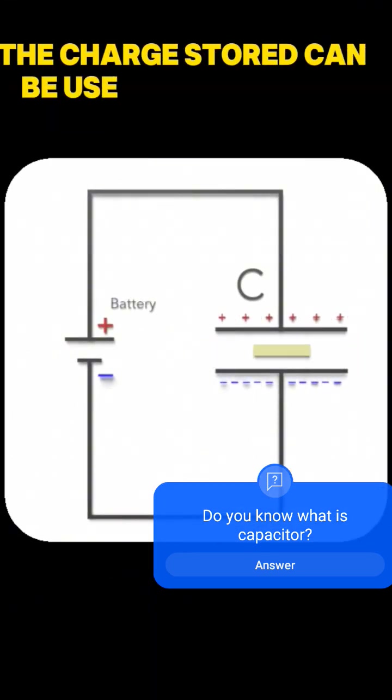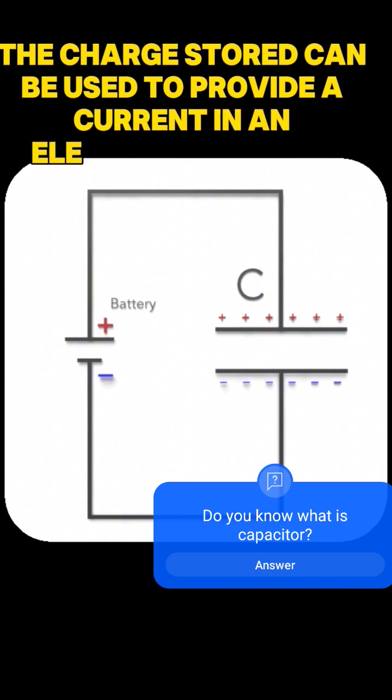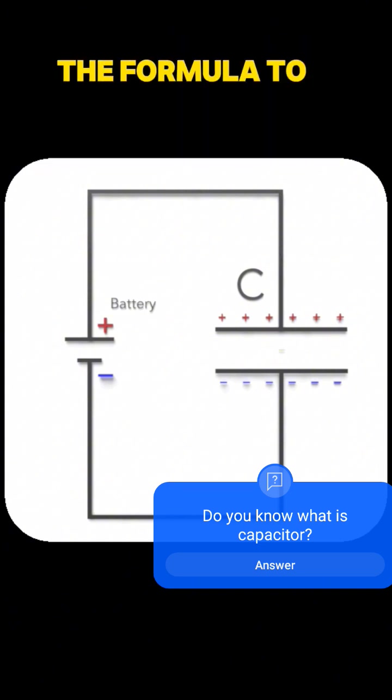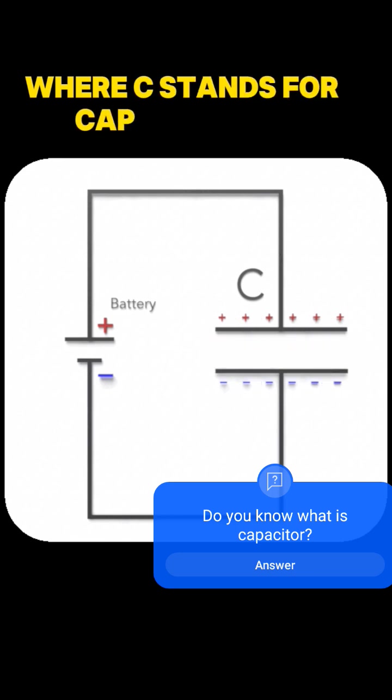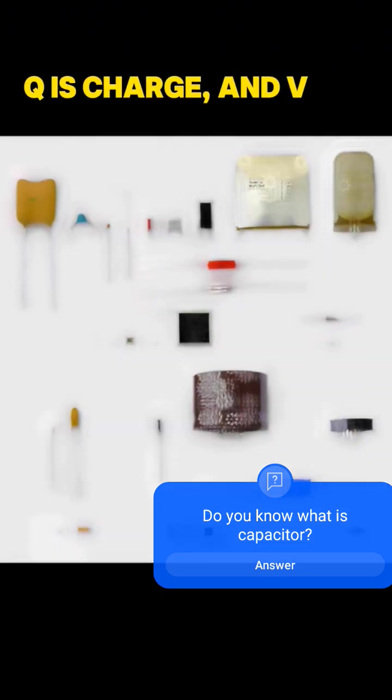The charge stored can be used to provide a current in an electrical circuit. The formula to calculate the capacitance is C equals Q over V, where C stands for capacitance, Q is charge, and V is voltage.